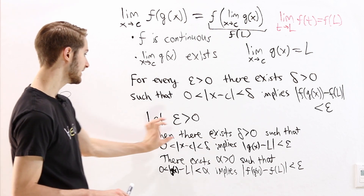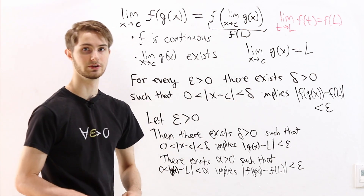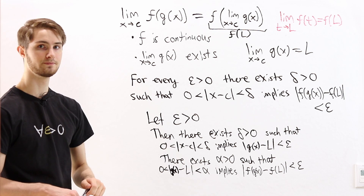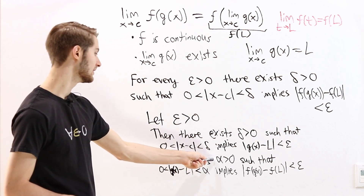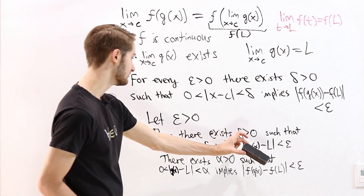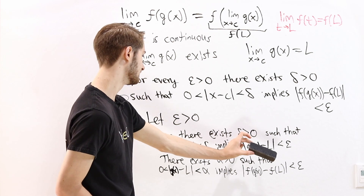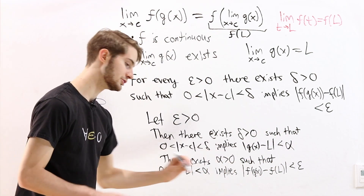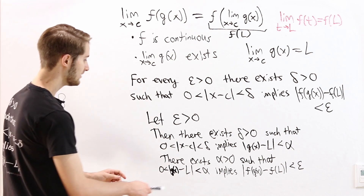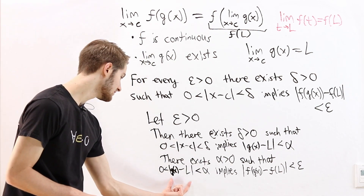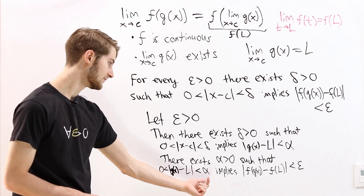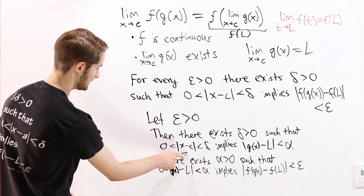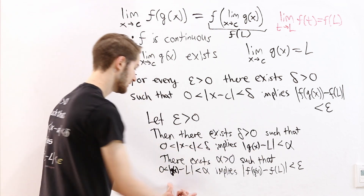The second statement — there exists a delta greater than 0 — has to be true for every positive number, and alpha is a positive number. So what we can do is find a value of delta — this delta greater than 0 — not so that it applies to epsilon, but so that it applies to alpha. So now we have: if the distance from g of x to L is less than alpha, then the distance from f of g of x to f of L is less than epsilon. And we know that if x minus c is less than delta, then this condition is going to be satisfied.